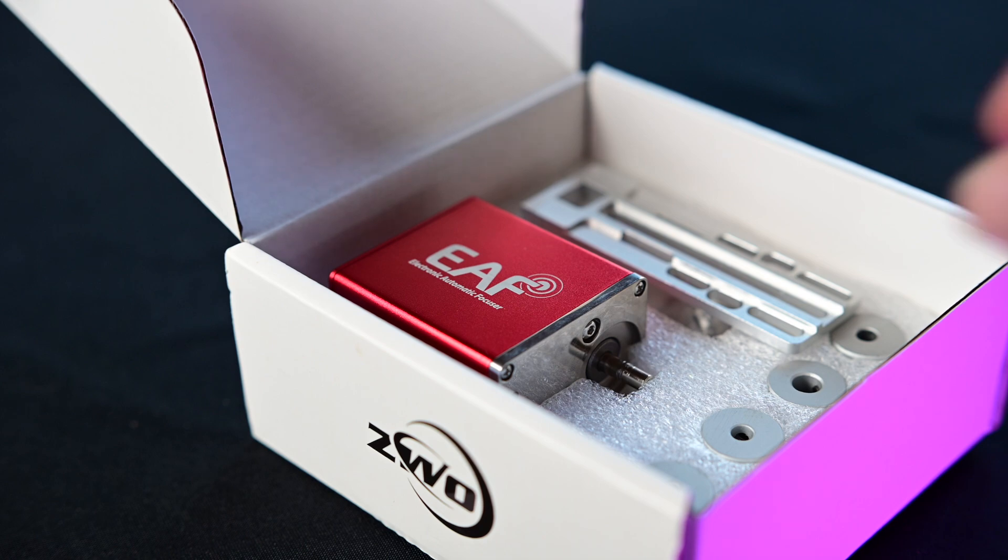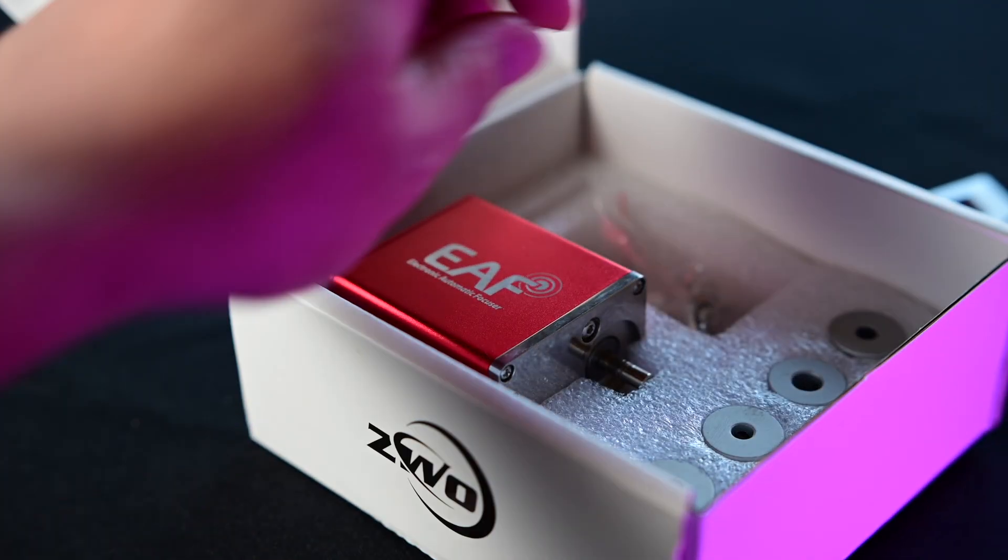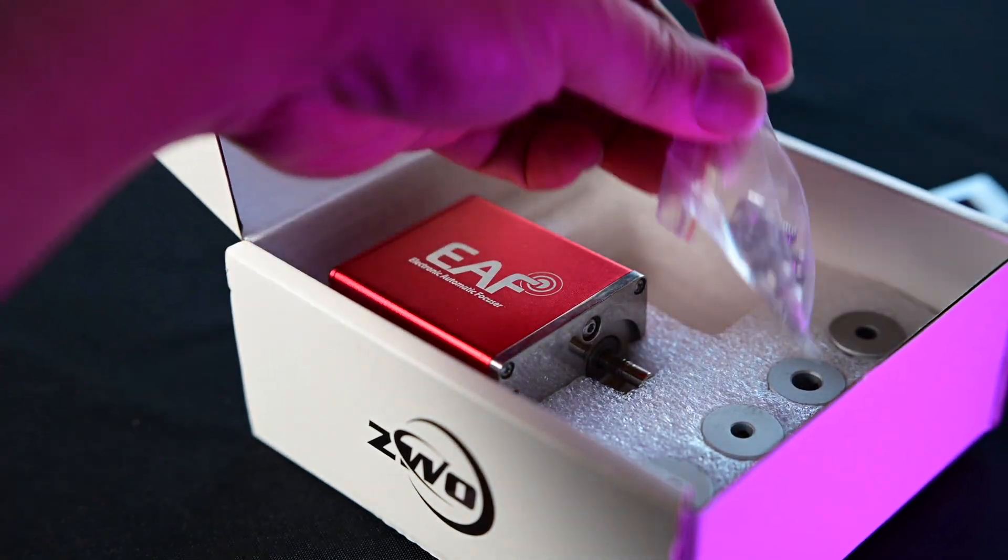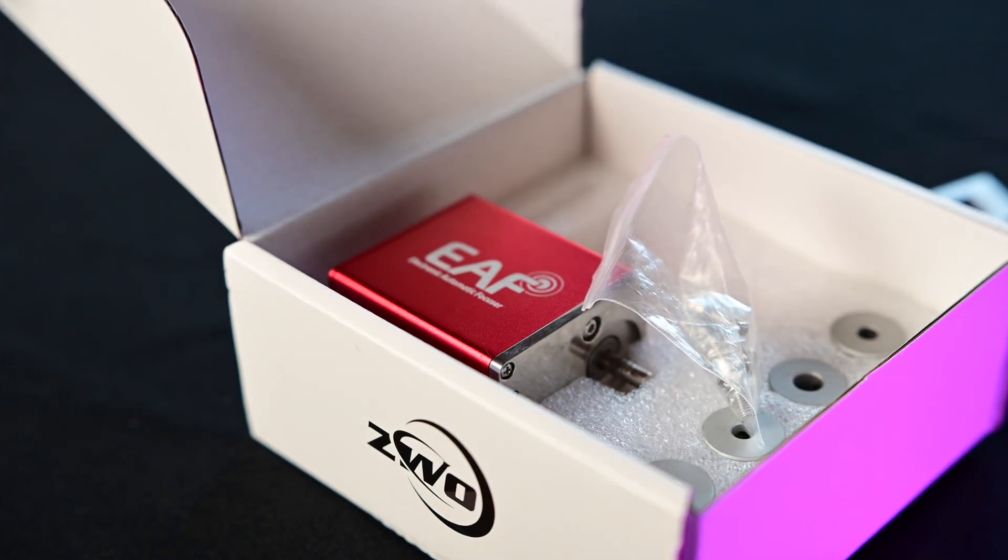So with that, let's get this. Well, here it is, the EAF all nice and snuggly in the box. So what you'll have is your electronic focuser, the bracket, and also underneath the bracket you'll get some hardware.